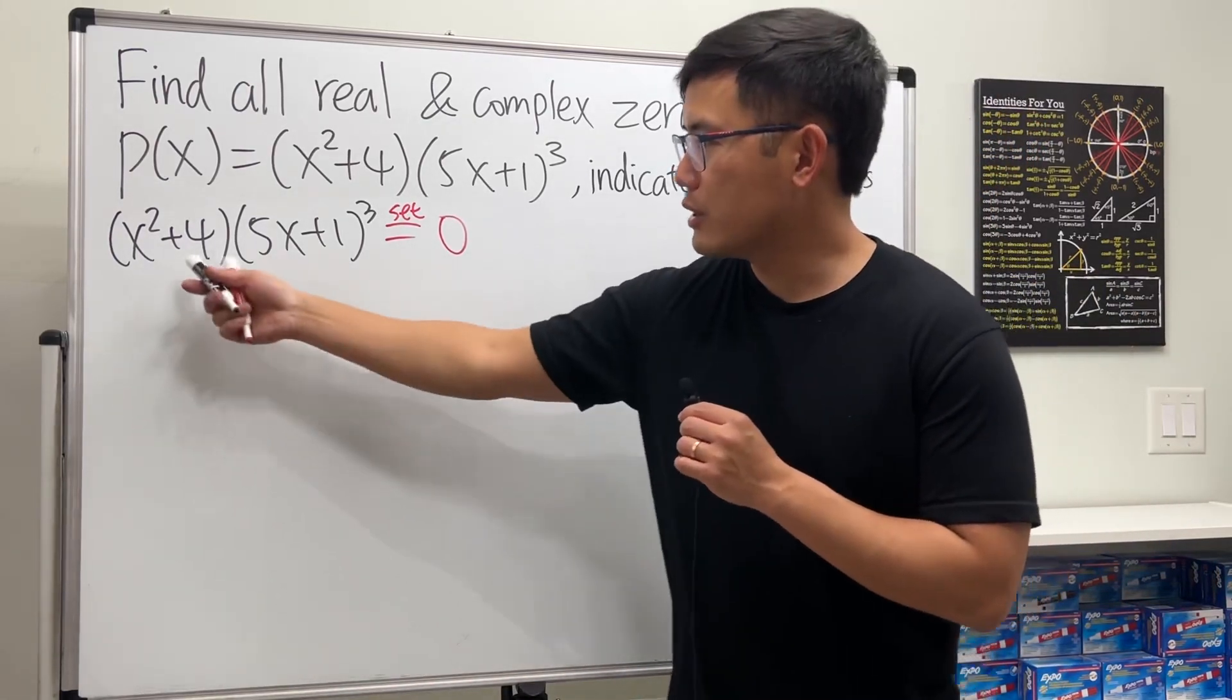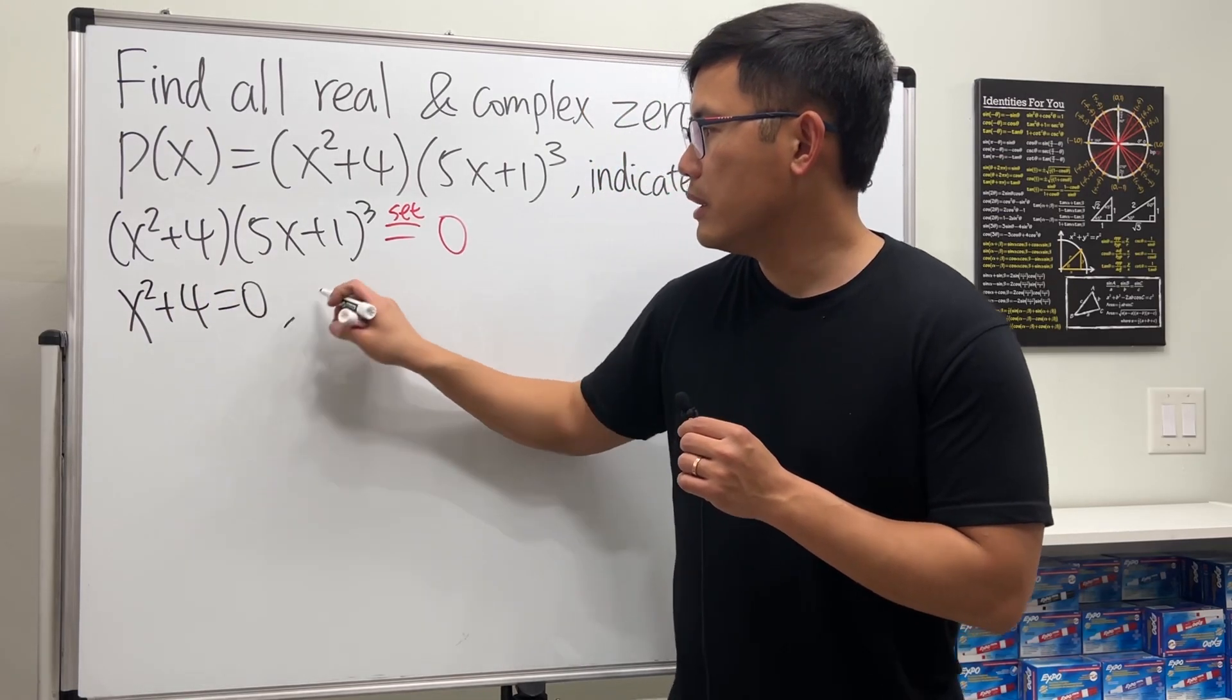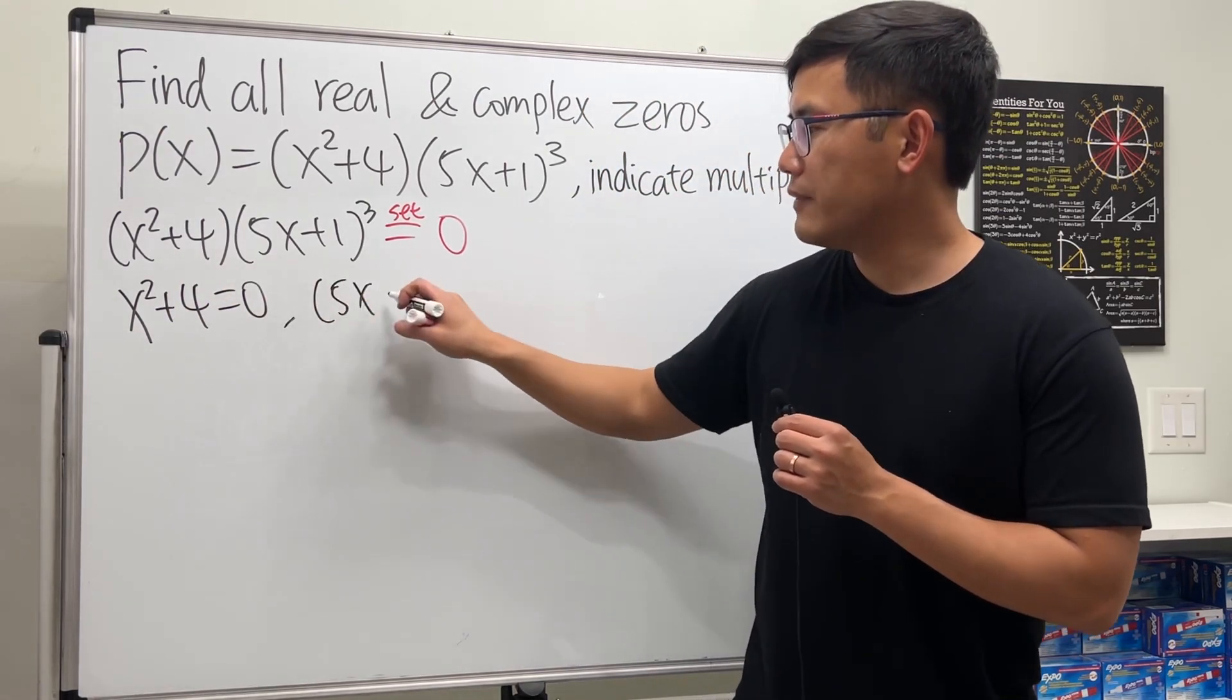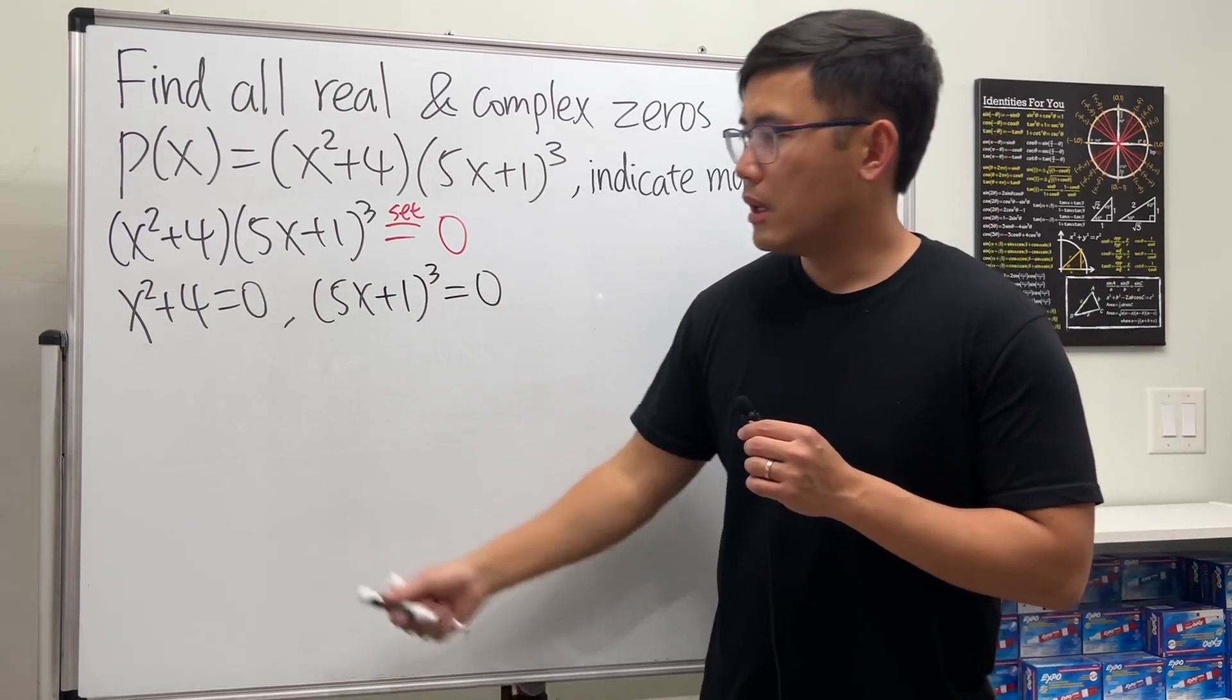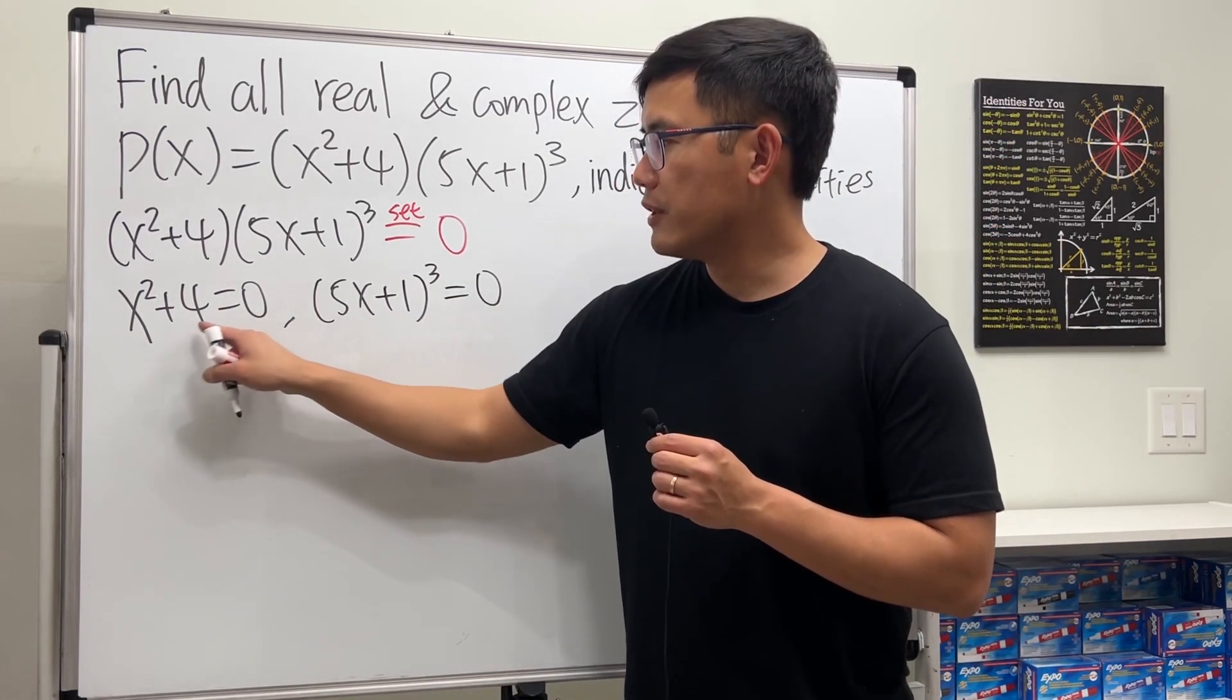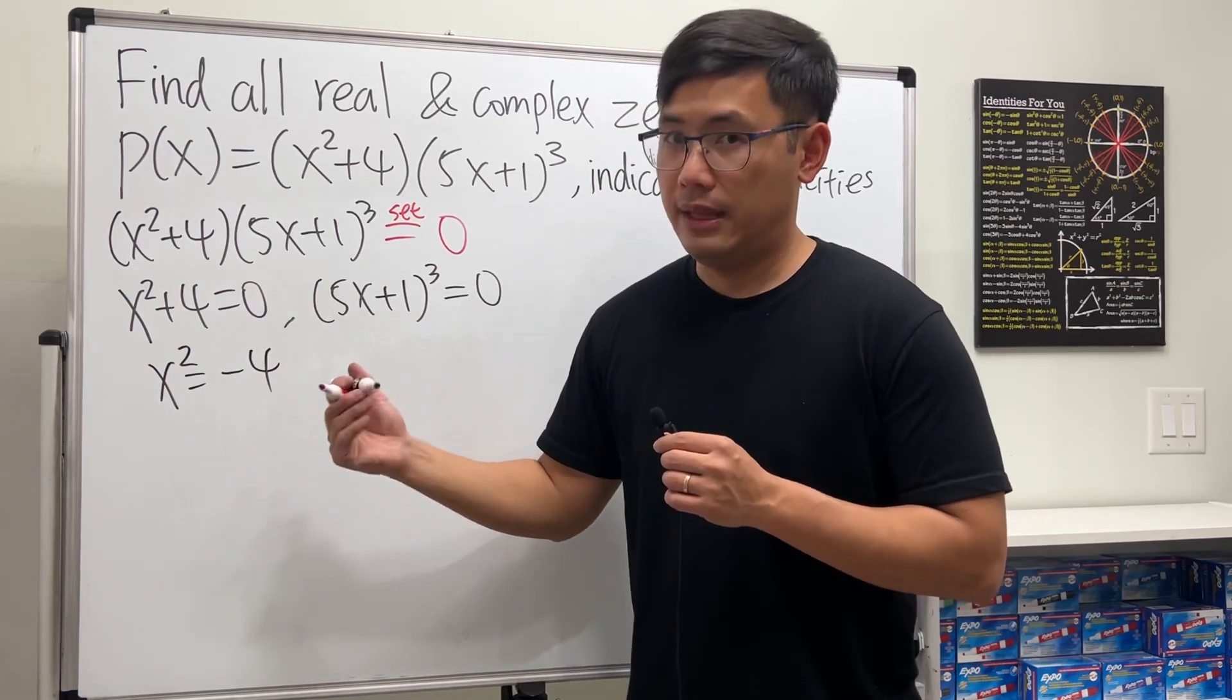This is already factored, that's great. So we can just go ahead and say x²+4 is equal to zero and the other part (5x+1)³ is equal to zero. To solve this we can just move the 4 to the other side, so x² equals negative 4, and then we can just take the square root on both sides.